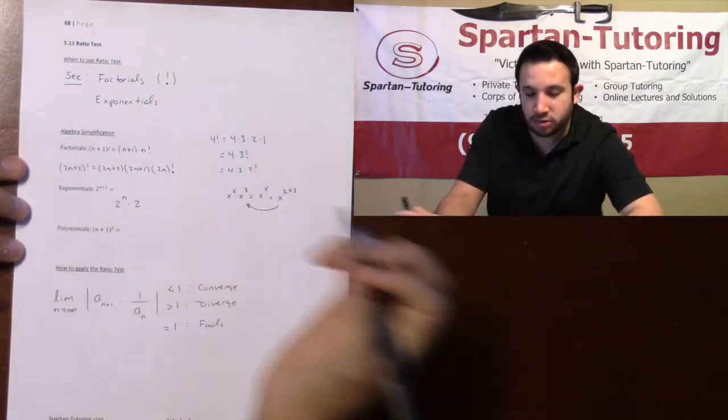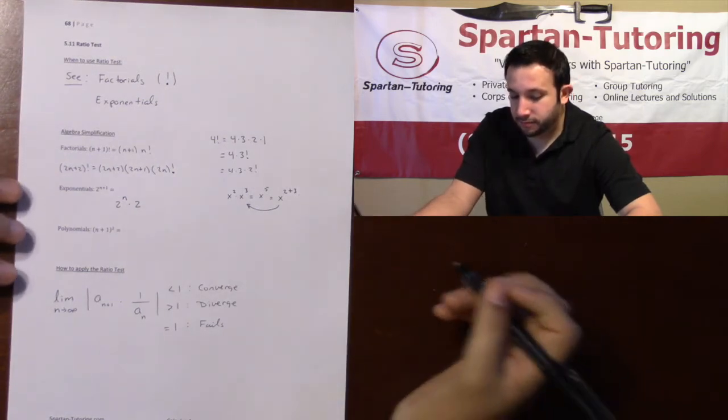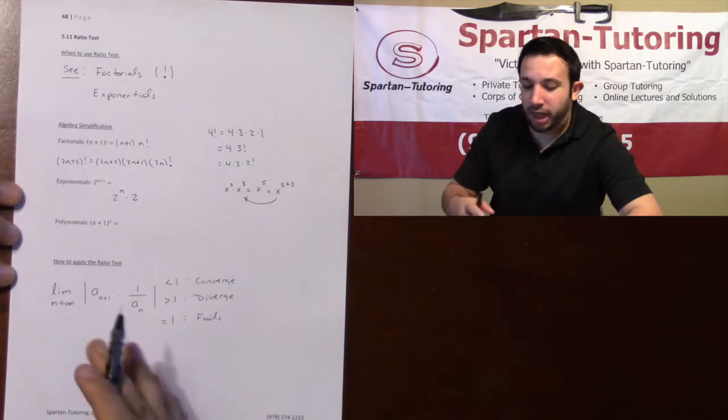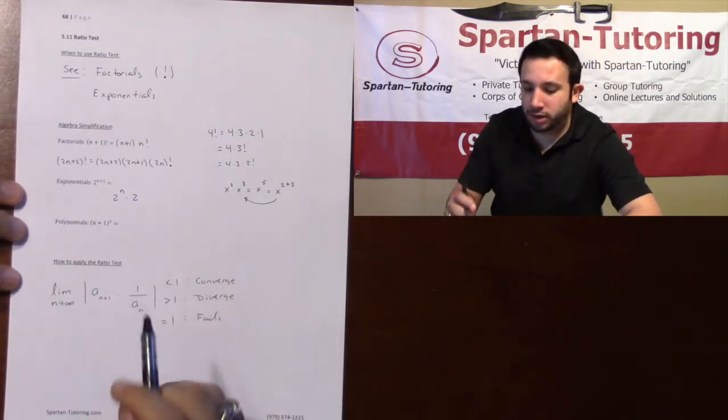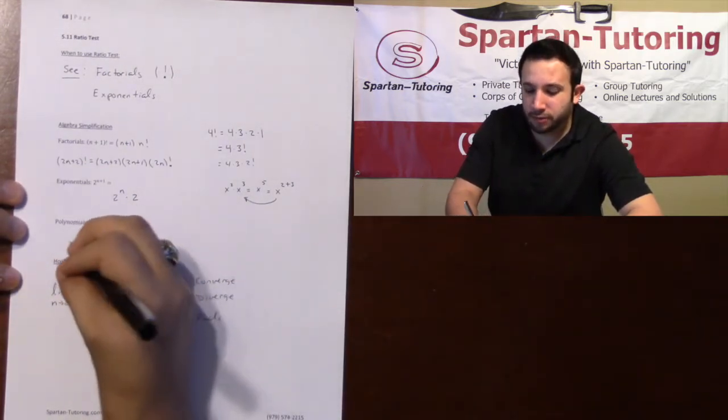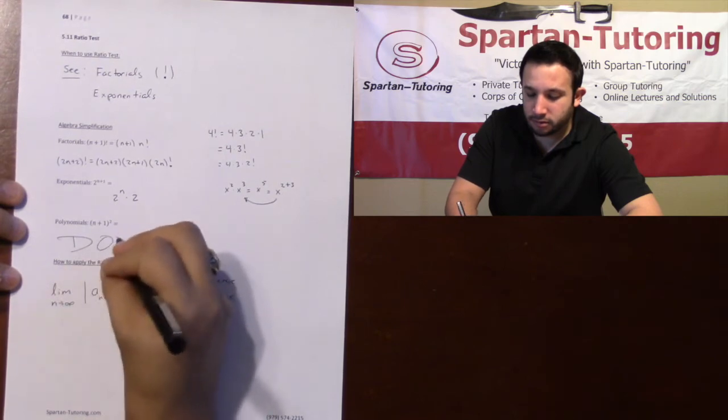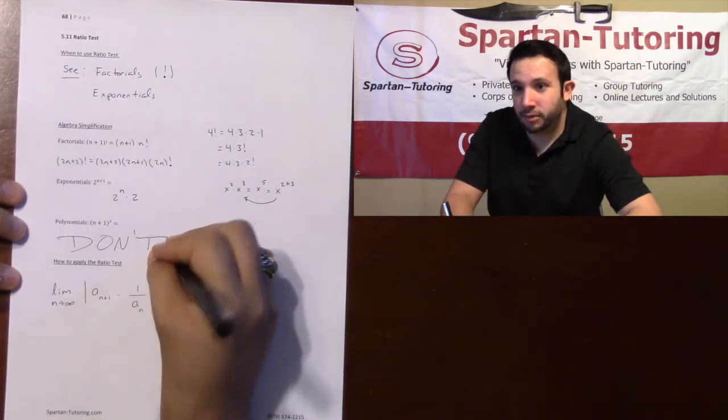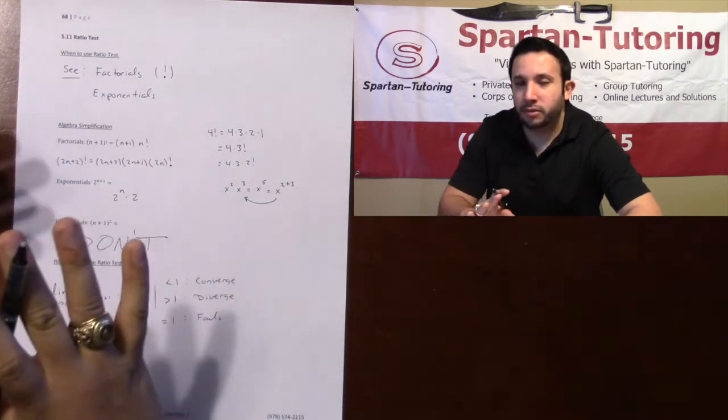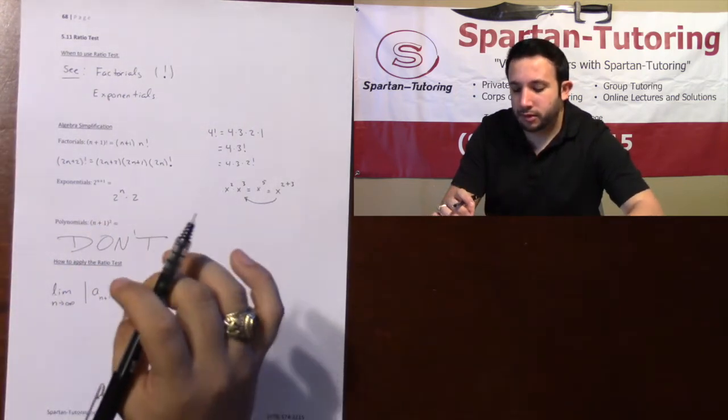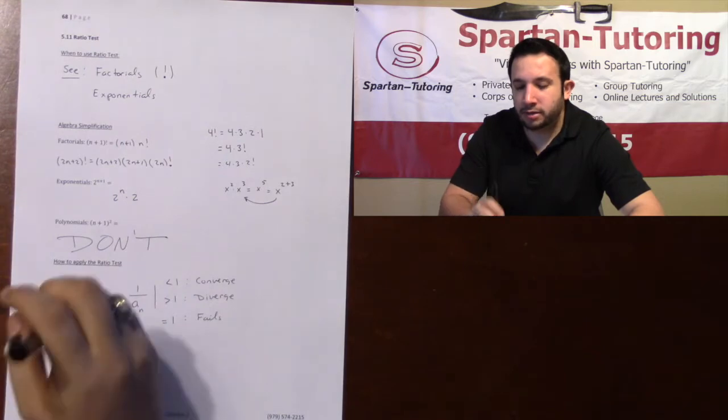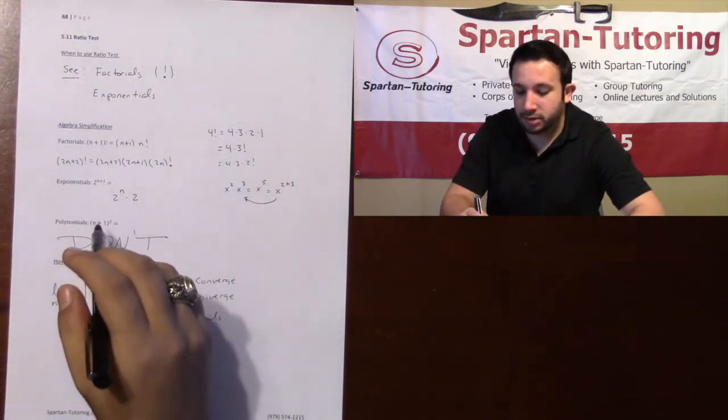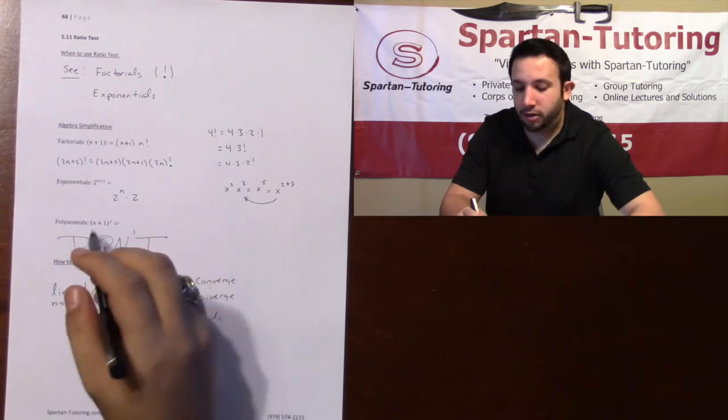So if you come over to here and see something like 2 to the n plus 1, I can make this 2 to the n times 2 to the 1, which is just 2. Finally, let's talk about polynomials. If you see something like n plus 1 squared within a ratio test, the way I want you to simplify it: don't—please, please, please—leave them alone as for the polynomials. Don't mess with them. They'll be taken into account when you actually apply the ratio test.